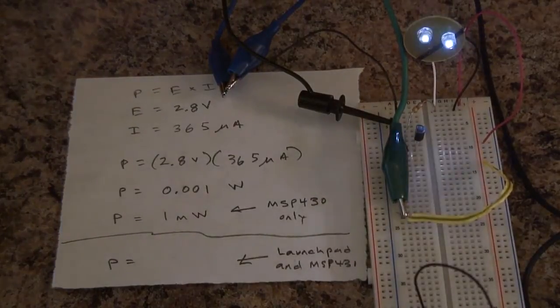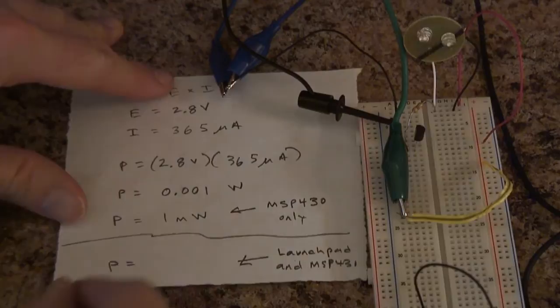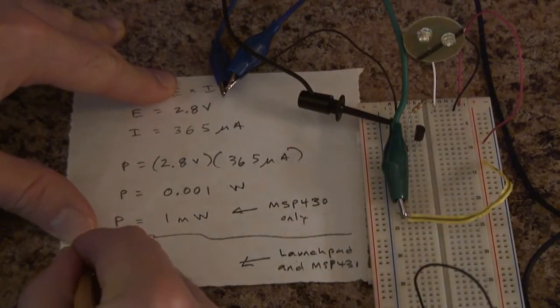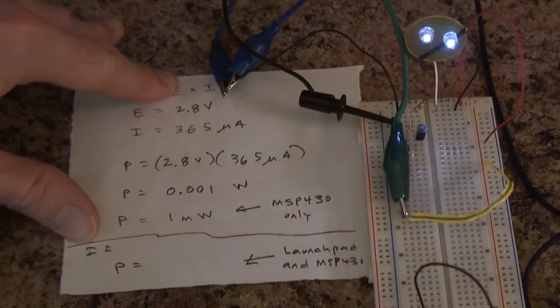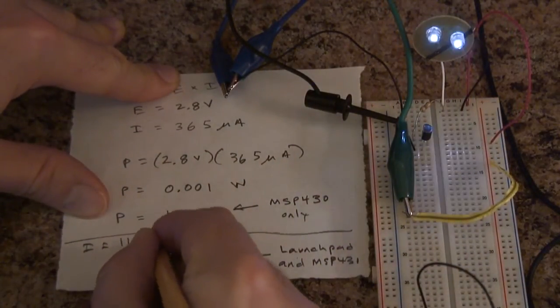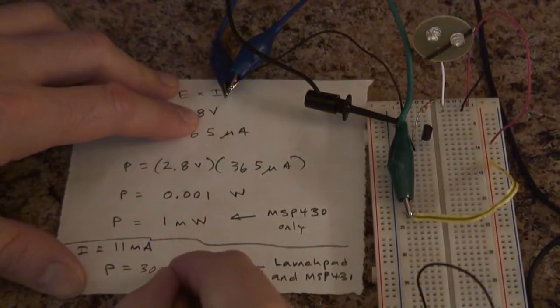Okay, so if you want to see how much power the launch pad uses with the LEDs on, I'm going to assume the current is about 11 milliamps. That bumps up the power consumption to about 30 milliwatts.